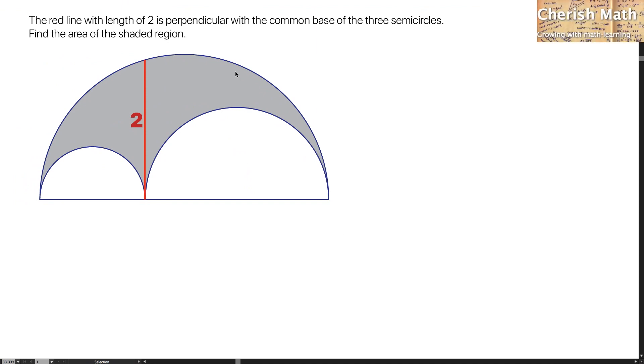Hi from Cherish Math. This is the question: The red line with length of 2 is perpendicular with the common base of 3 semicircles. Find the area of the shaded region.